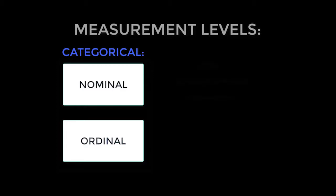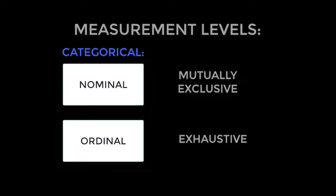As we discuss categorical measurement, it's important to acknowledge that construction of these measurement items are subject to two governing rules: items must be mutually exclusive, and items must be exhaustive. Mutually exclusive means the construction of categories must be distinct and not overlap — an individual responding to a survey should only have one answer to mark. Exhaustive means there must be enough categories available to capture all of the data — an individual should always have a place to put his or her answer.